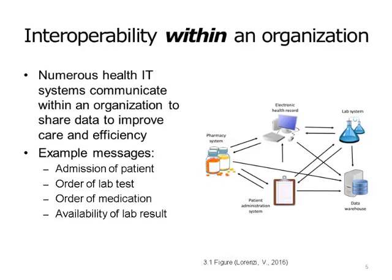This slide includes a diagram. We have a patient administration system where a patient would first be recorded as admitted. That message might flow to the EHR, the hospital pharmacy system, the hospital laboratory system, and the hospital's data warehouse. On the EHR, a doctor may record a lab order, which would flow to the laboratory system and the data warehouse. The doctor may also record a medication order, which would flow from the EHR to the hospital's pharmacy system and the data warehouse. When the laboratory finishes processing and gets results of a lab test, it would send that result back to the EHR and perhaps to the data warehouse. These are some examples of interoperability within an organization.